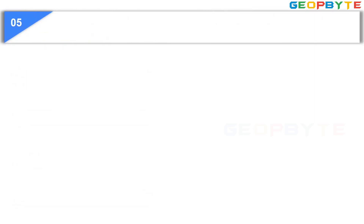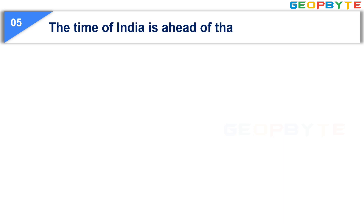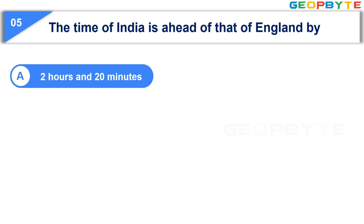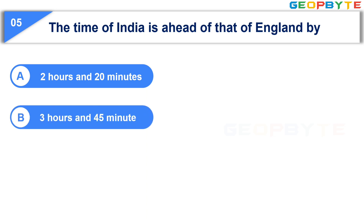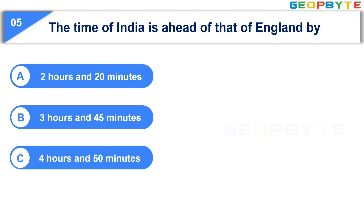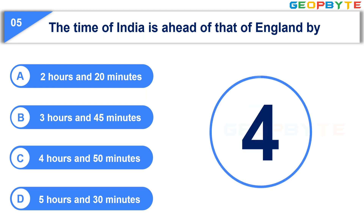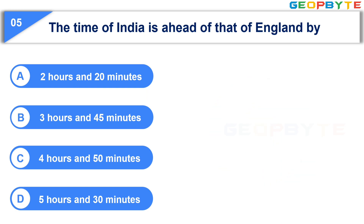Next question: the time of India is ahead of that of England by — Option A: 2 hours and 20 minutes. Option B: 3 hours and 45 minutes. Option C: 4 hours and 50 minutes. Option D: 5 hours and 30 minutes. Your time starts now. Your time is up and the correct answer is Option D: 5 hours and 30 minutes.